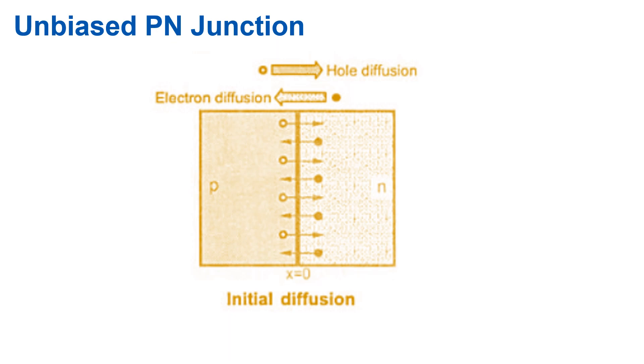In a high charge carrier concentration area, all the charge carriers are of similar type. They may be either electrons or holes. They will start repelling each other. Due to this action, charge carriers start moving from high concentration area to low concentration area to achieve uniform concentration all over the material. This process is called diffusion and exists when there is non-uniform concentration of charge carriers in the material.